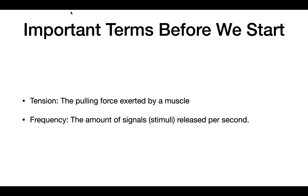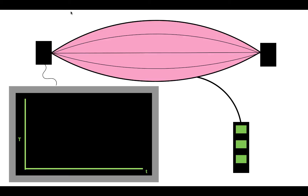Before we start the experiments in this video, you have to know two terms. The first term is tension — in the context of muscles, tension is the pulling force exerted by a muscle. And frequency in the context of muscles is the amount of signals or stimuli released per second.